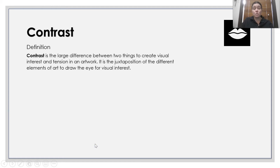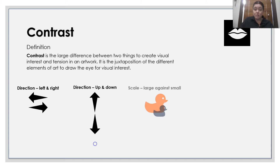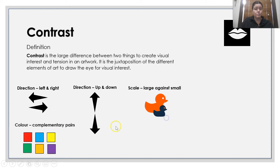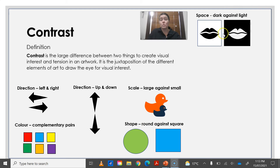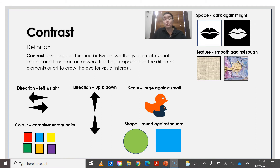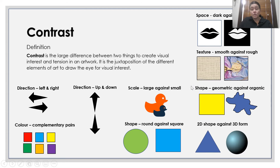Contrast is the large difference between two things to create visual interest and tension within an artwork — it's the juxtaposition of the different elements of art to draw the eye for visual interest. You could show contrast with direction — left and right, up and down. Scale — large against small. Complementary pairs. Shape — round against square. Space — dark against light or light against dark. Texture — smooth against rough. Shape — geometric against organic. Or 2D shape against three-dimensional form.